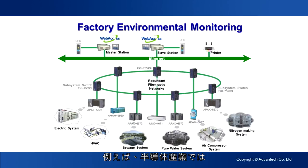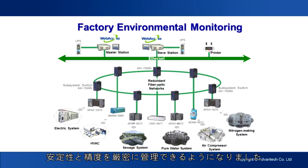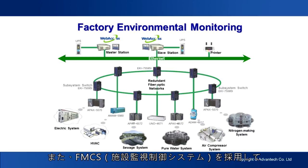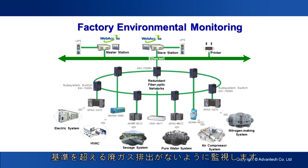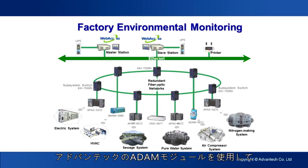For example, in the semiconductor industry, as factory automation is consistently improved, the Facility Management Control System (FMCS) contributes to close supervision for stability and accuracy of temperature and moisture in the clean room. FMCS is also applied to monitor the amount of waste gas emission and to avoid overstandardization. Other monitoring items include power, HVAC, wastewater recycling, and so on. You can easily use Advantech's I/O modules to collect all data from sensors distributed wherever needed.